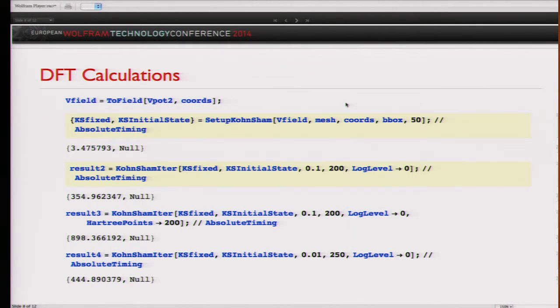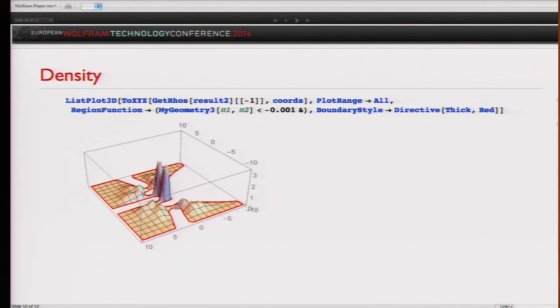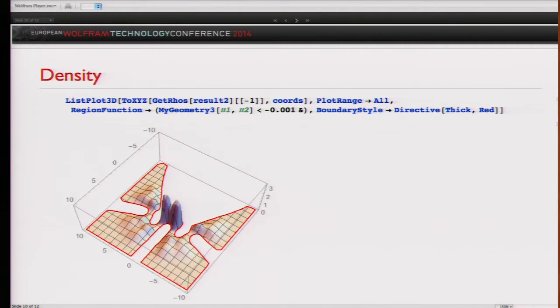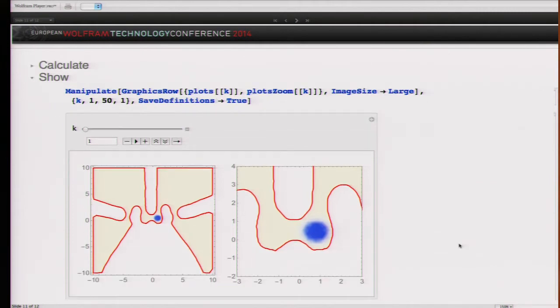Once you have done the calculation, you can use Mathematica to analyze your results. For instance, this is the density which is, as you have probably guessed, an important quantity in density functional theory. This plot here shows you that the electrons are really sitting at those two dots, which was not very clear from the outset. But there is a finite probability that electrons might also spill out here. Using Mathematica, you can now also make simple nice user interfaces to explore different aspects of the system. So, I hope you like the examples.